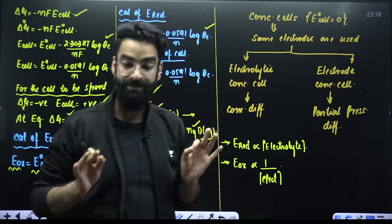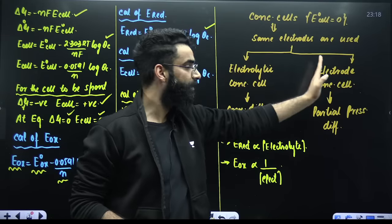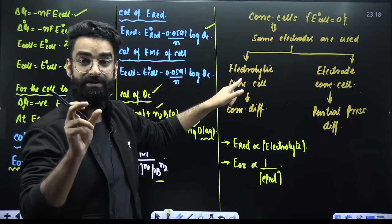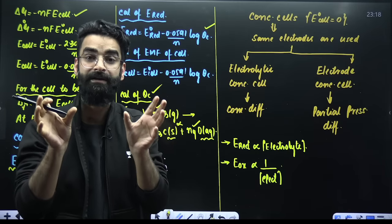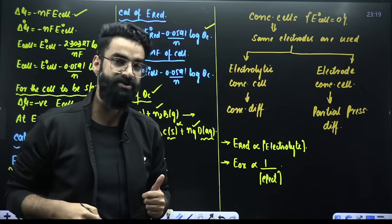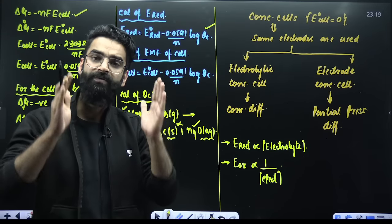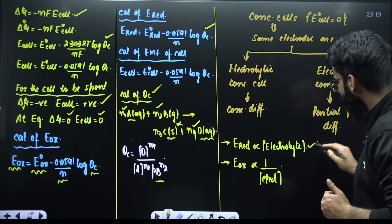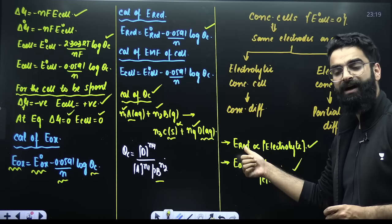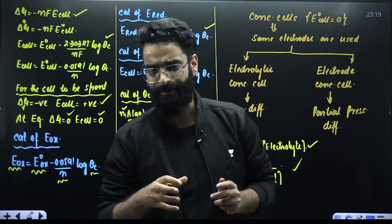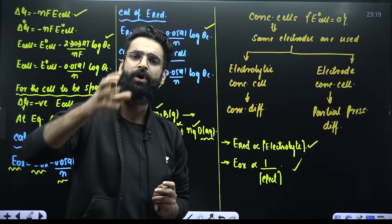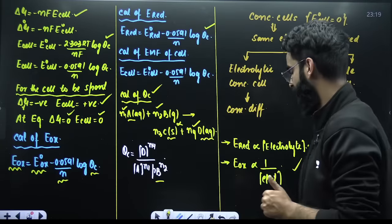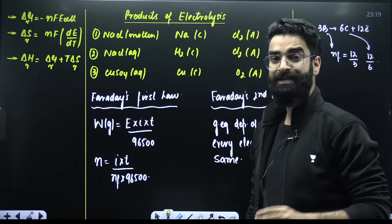When two identical electrodes are used, E°cell is zero. In electrolytic concentration cells, different electrolyte concentrations generate EMF; in electrode concentration cells, different partial pressures generate EMF. Reduction potential of an electrode is directly proportional to the concentration of electrolyte: higher concentration gives higher reduction potential and lower oxidation potential. Inverse is the case for oxidation potential.